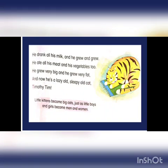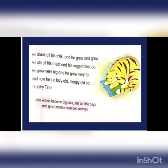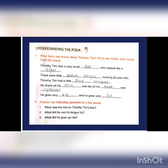Every day, Timothy Tim drank all his milk and ate all his meat and vegetables. Then he grew very big and very fat, and became a lazy and sleepy old cat. You can see in this picture — at the beginning, Timothy Tim was a very small cat, and now he is a very big fat cat. So the moral of the poem is: little kittens become big cats, just as little boys and girls become men and women. Understood, children?